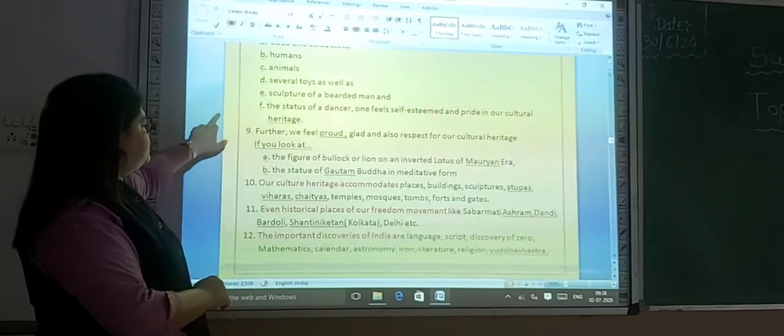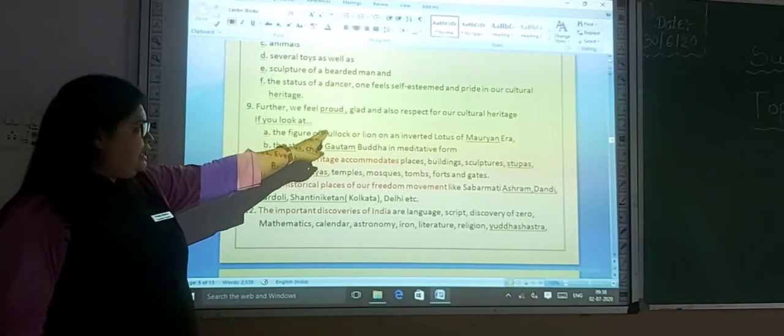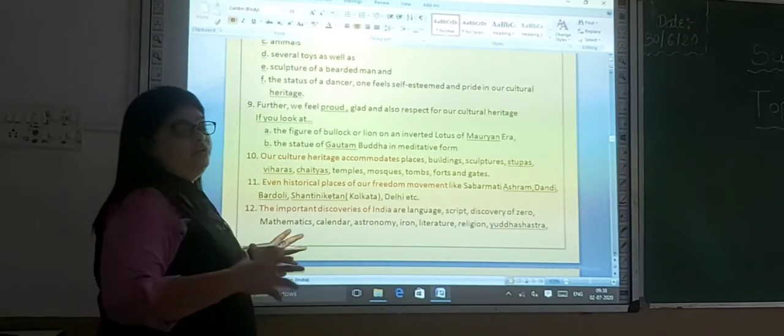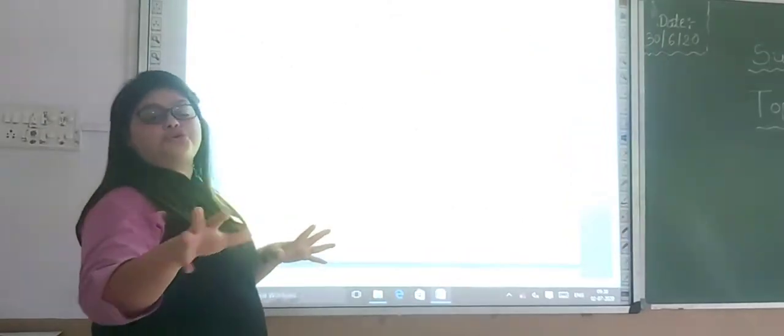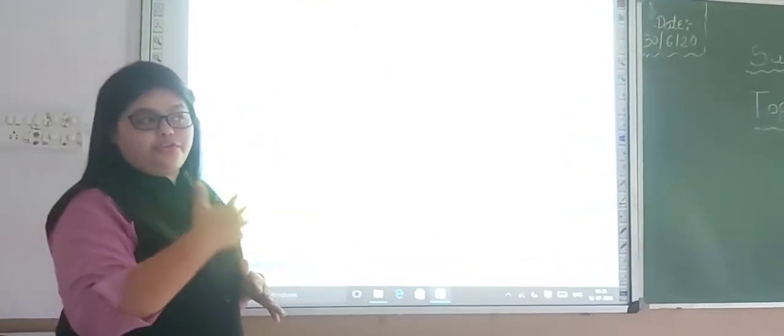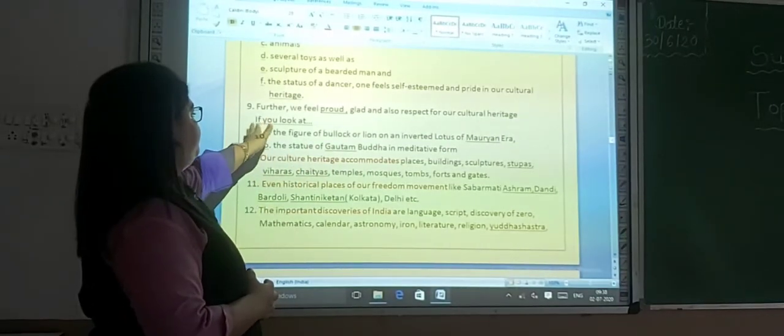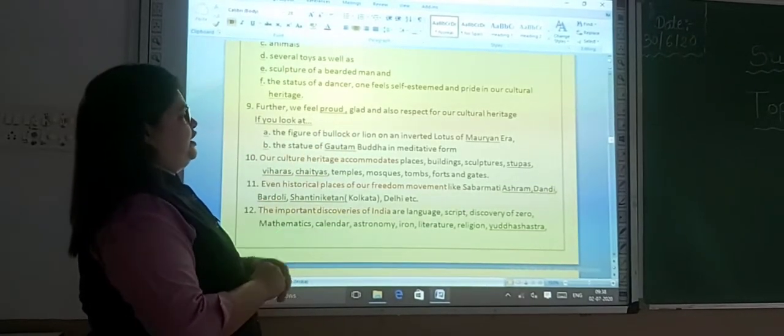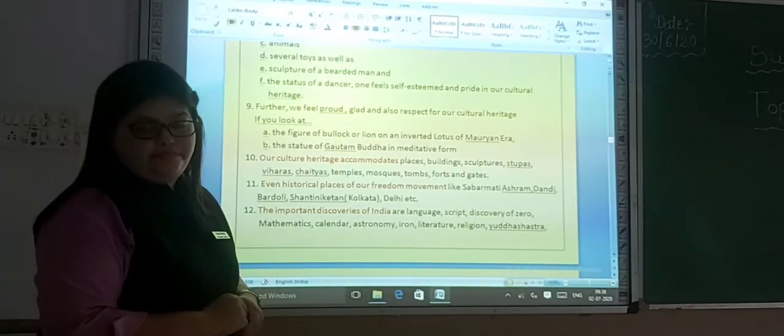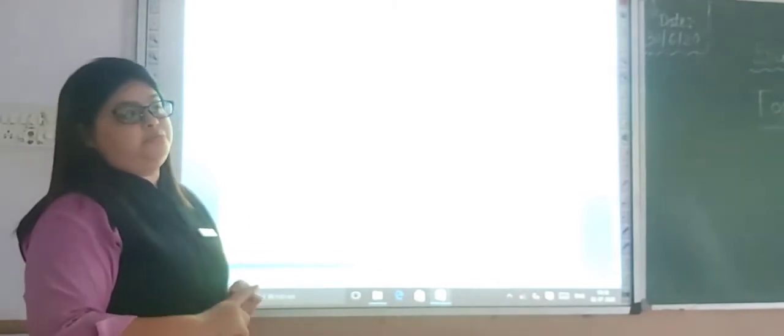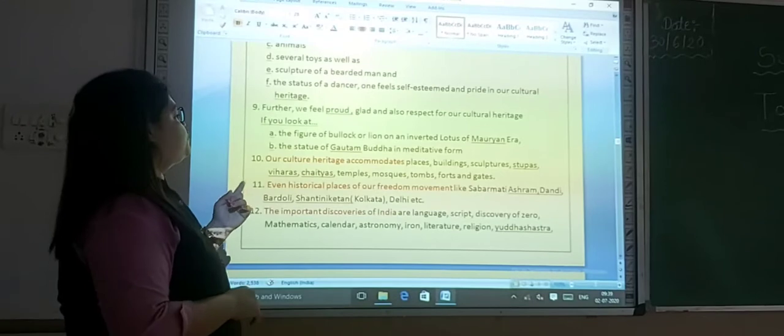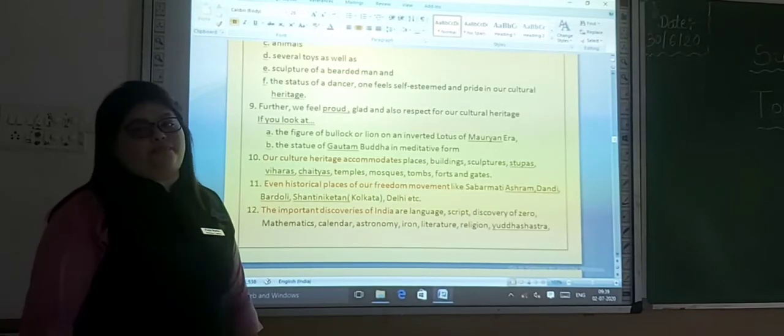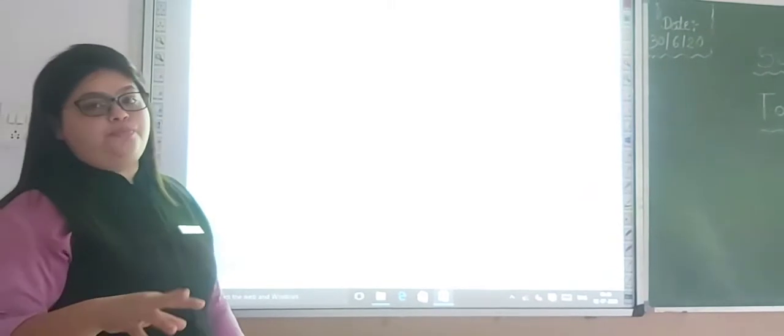Further, we feel proud, glad and also respect for our cultural heritage. If you're not proud of our heritage, then you should be proud, because there are so many things on which we have to be proud. If you look at the figure of Ashoka or lion and inverted lotus of Maurya era, you will learn these in the seventh standard, different kinds of eras, Maurya era, Gupta era. The figure of Ashoka or lion and the statue of Gautam Buddha in a very natural form.